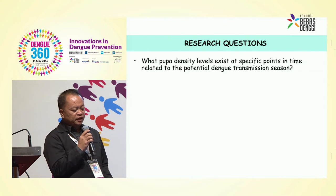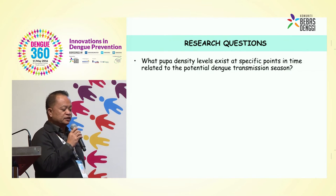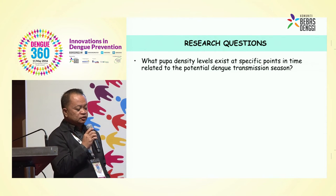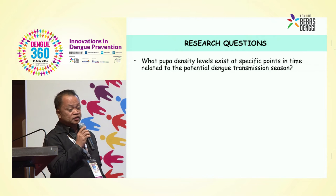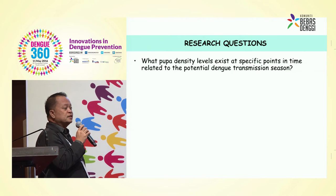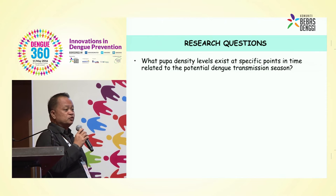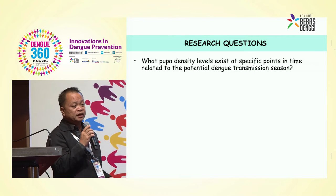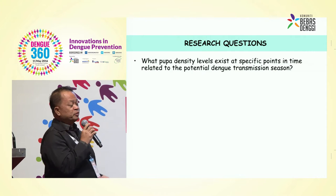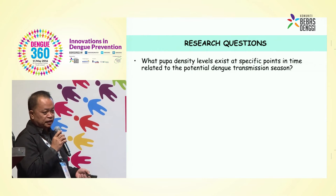We have these research questions in mind: what pupa density or vector density levels exist at specific points in time related to the potential dengue transmission season? We're actually looking for a kind of threshold level which would show direct epidemiological significance during the occurrence of epidemics. I think my presentation will be a good prelude to the rest of the methods which will be later presented by my former advisor, Dr. Nasni.